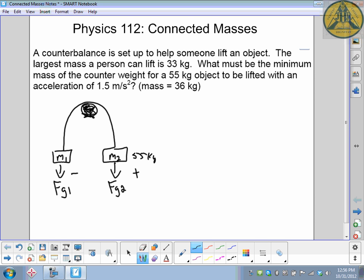The information here says that the person can lift 33 kilograms. So the maximum applied force this person can give you would be the 33 kilograms weight, so 33 times 9.81. The force applied is the maximum amount of force this person can lift up, which is equal to the weight of 33 kilograms. That's 323 newtons.